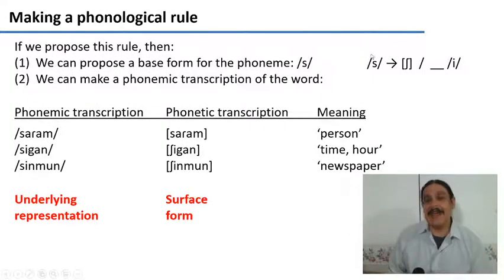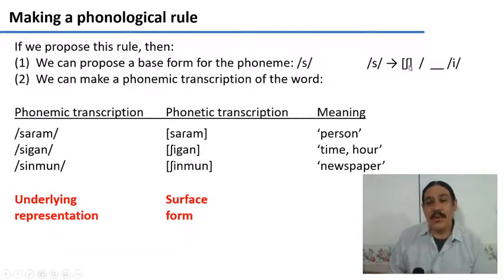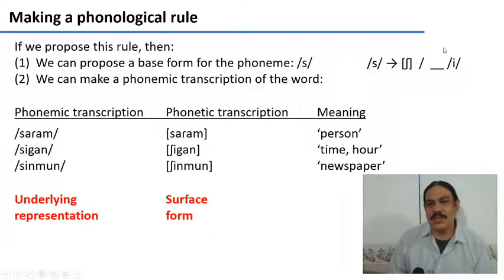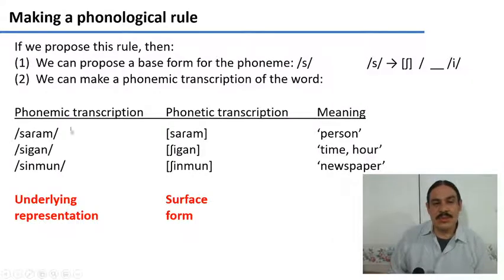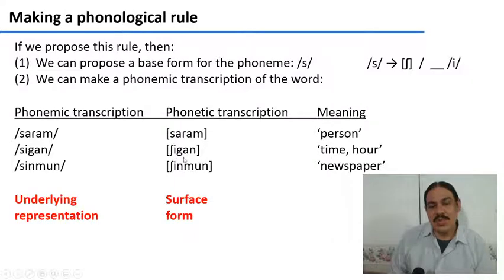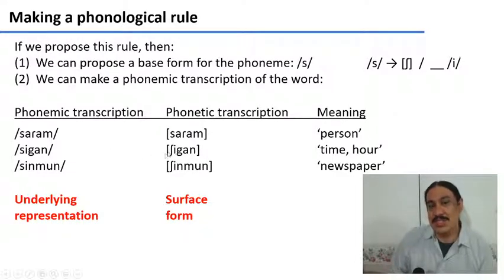If we propose the rule like this, we have a base form for the phoneme and an allophone that is conditioned on an environment, so that the S followed by an E is transformed into Shi, as in Shigan. So the underlying Sigan would be transformed into Shigan. We would assume that there are underlying representations of the words that then undergo the rule and emerge as the surface form. Sigan goes into the rule, the S is transformed into an Esh, and it comes out as Shigan. That's what the phonological rule is trying to explain.